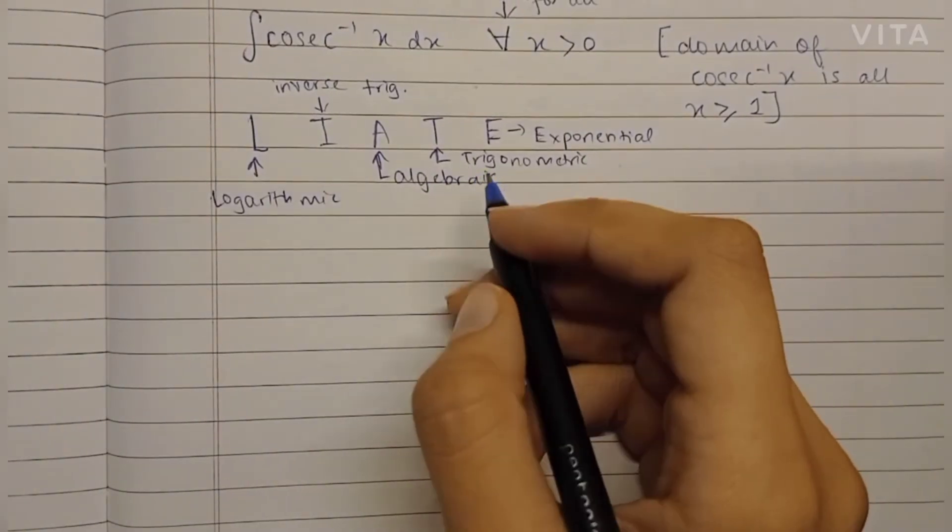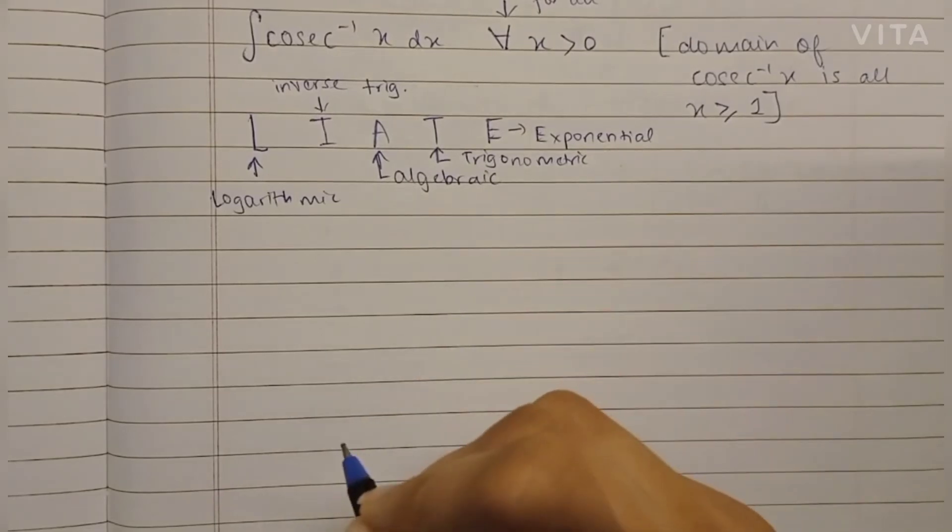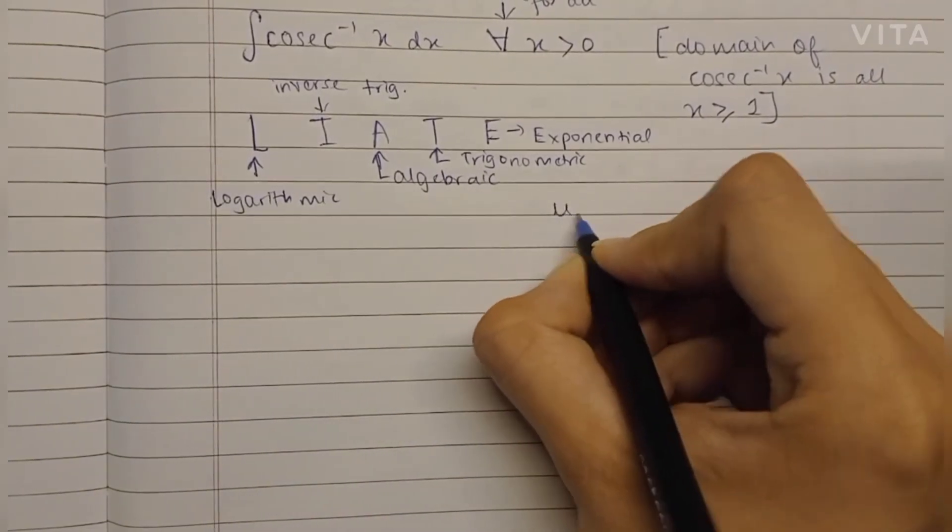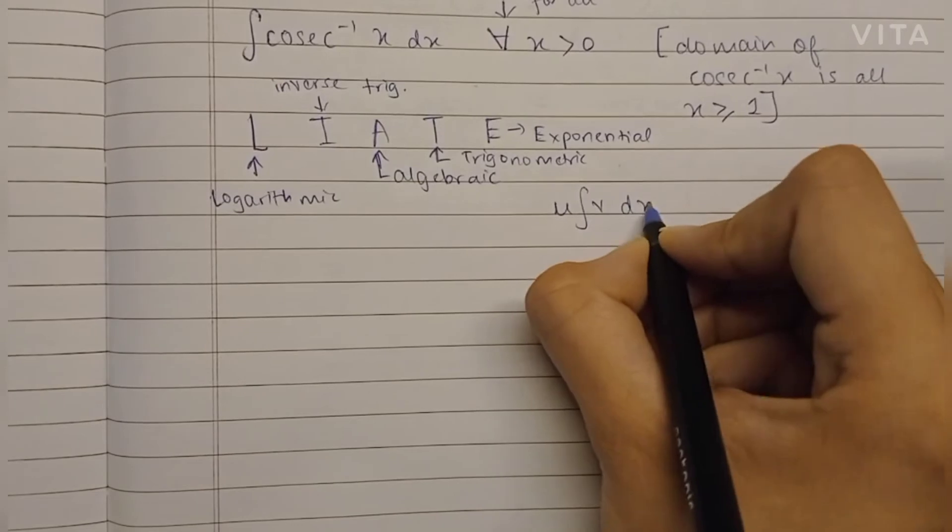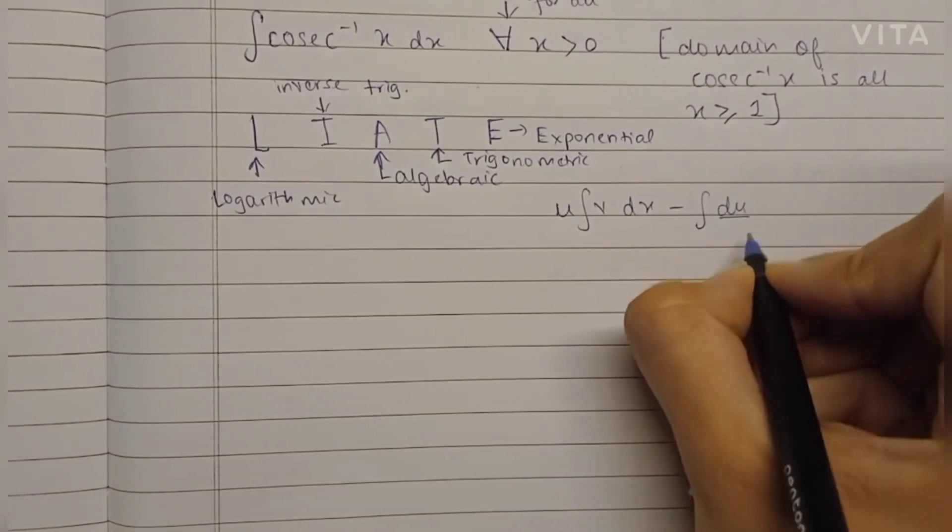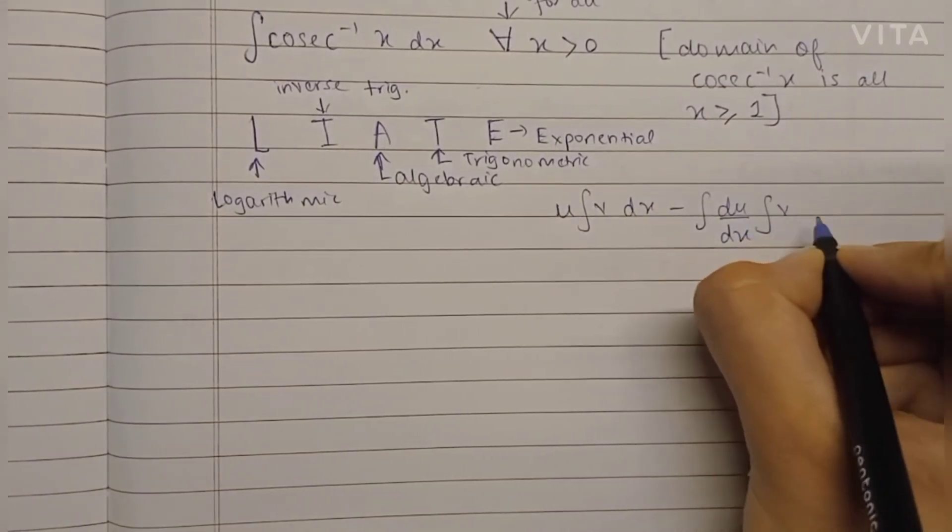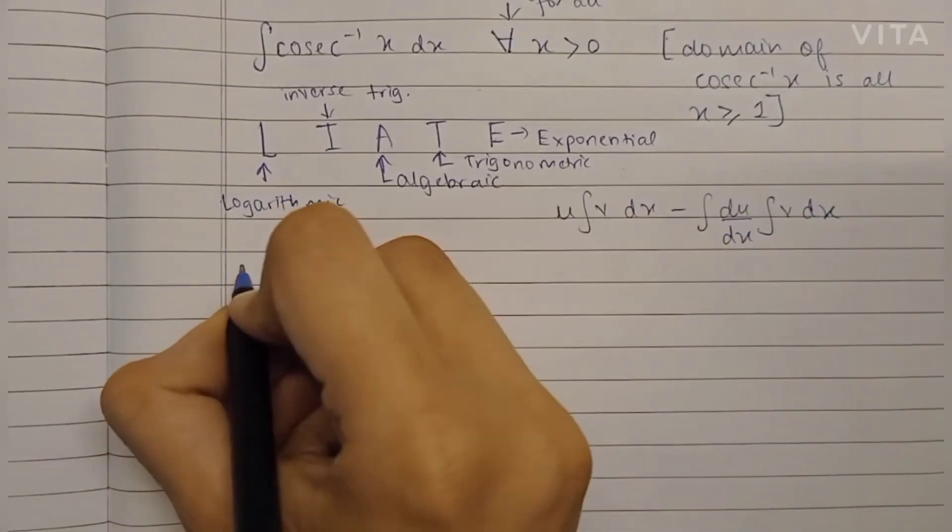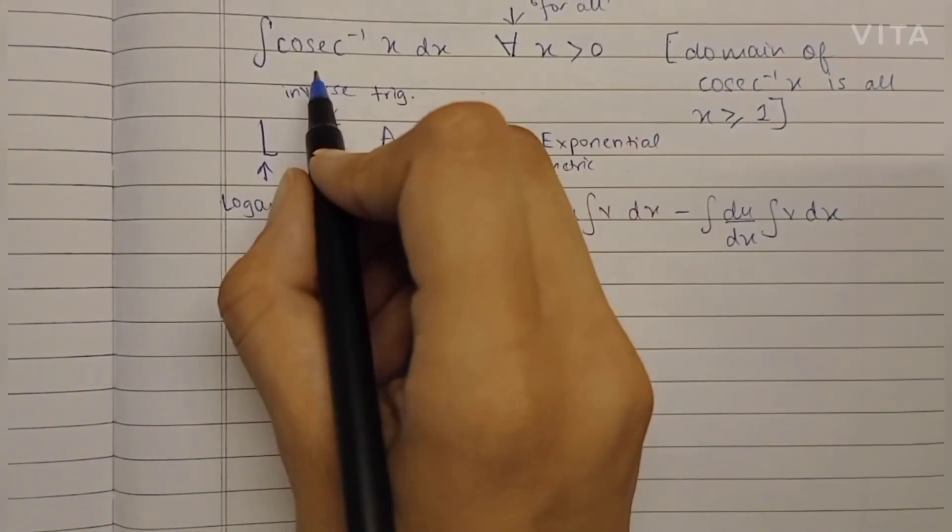To solve this problem, we will be using the LIATE rule because we are solving it by parts. The formula for by parts is u into the integration of v dx minus the integration of differentiation of u into the integration of v dx. U and v are two terms of the integral.